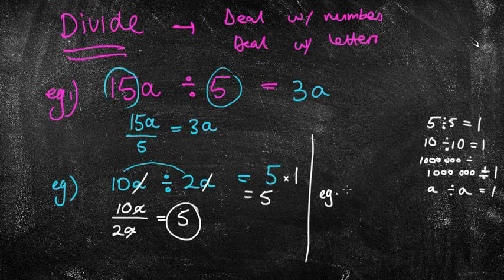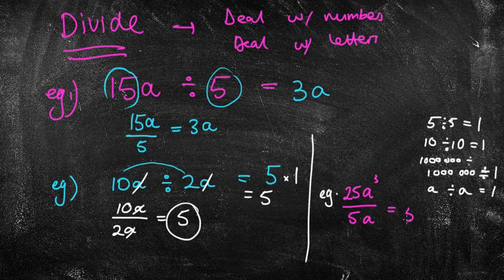You might have let's say 25a cubed divided by 5a. In that case again deal with the numbers first. 25 divided by 5 is just 5. I've got a cubed divided by a. Well I think a cubed means a times a times a. And you're dividing it by a, which means just one of them will cross out, which is leaving two of them left over.